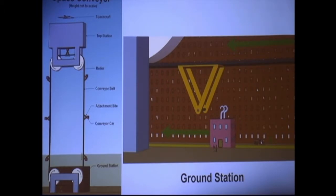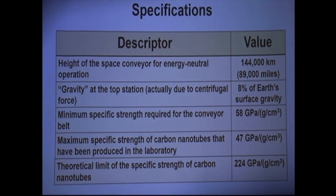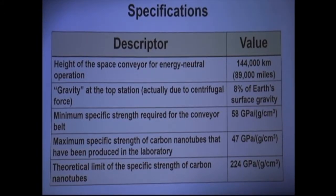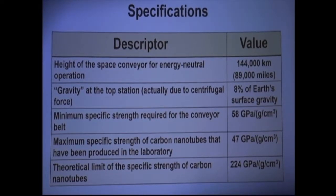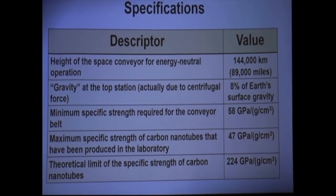This chart shows the technical specifications associated with the space conveyor. As previously mentioned, the height of the space conveyor for energy neutral operation is 144,000 kilometers or 89,000 miles. The gravity, in quotes, at the top station, actually due to centrifugal force, is about 8% of Earth's surface gravity, which is about half of lunar gravity, which is kind of convenient because it's enough to keep things from flying off. But it could be useful, for example, those who are mobility impaired could spend some time there. It could be a tourist attraction, as well as a launch platform for spacecraft into deep space.